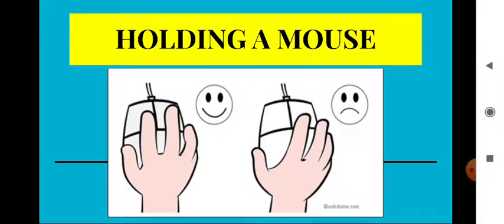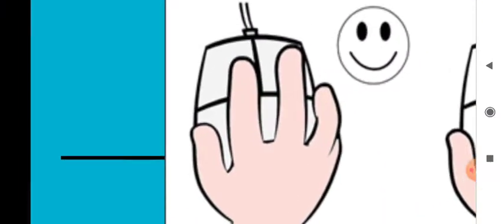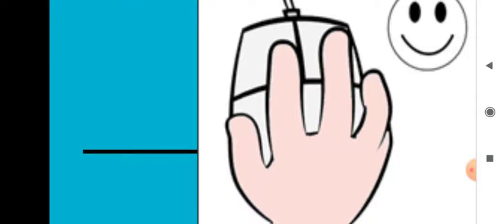Now, in this slide you can see how to hold a mouse. There are some steps given in your book. Step one: keep your palm on the back of the mouse. Step two: keep your index finger (four finger) on the left button, and your middle finger on the right button. Just look at this image — this is the correct way to hold a mouse.